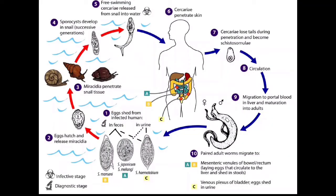For the life cycle, depending on the species, Schistosoma eggs are expelled by feces or urine. The eggs hatch and release miracidia, which swim and pierce particular snail intermediate hosts under the right conditions.